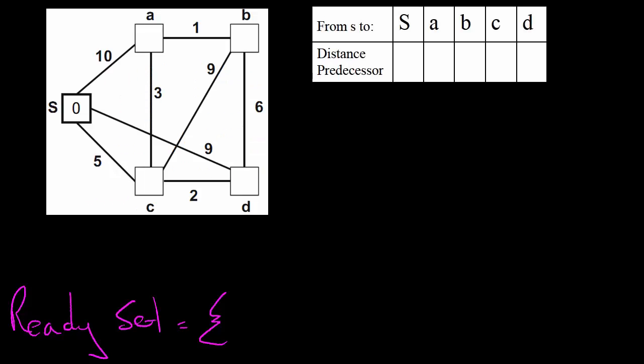We then reconstruct the shortest path by selecting the destination and working backwards towards the starting point. In the beginning, we only know that start node S is reachable with distance zero. The distances to all other nodes are infinite and we do not have any path predecessors recorded yet. We now select the node with the shortest distance from all nodes not yet included in the ReadySet.